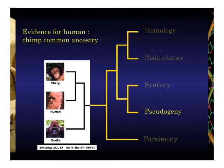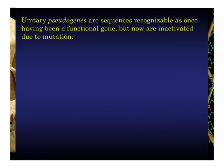Moving on to pseudogenes. We've already seen an example of this with that inactivated centromere on chromosome 2, as well as the telomere tip sequences present at the presumed fusion point. So what exactly is a pseudogene? These are sometimes referred to simply as junk DNA. There's sometimes a confusion between so-called junk DNA versus non-coding DNA. Non-coding DNA, of course, has tons of functions — nobody's arguing against that, and that's been known for a long time. What we're speaking of when we speak of pseudogenes is sequences that have clear signs of once having been functional.